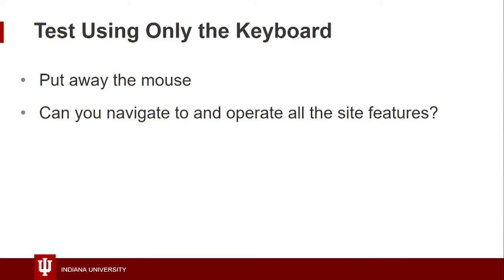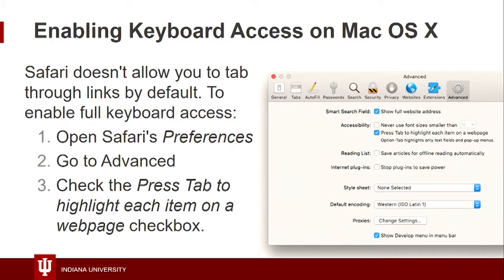Testing using only the keyboard: put away the mouse and try to navigate to and operate all the site features. One thing you might not know if you're a Mac developer is that keyboard accessibility is not on by default. You have to go to System Preferences, find the keyboard entry, and turn on 'press tab to highlight each item in the web page.' By default, tabs will skip over things like buttons on a Mac. Other browsers on Mac OS have similar settings.